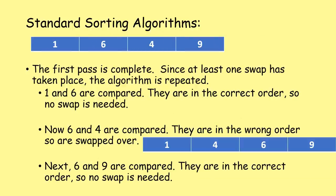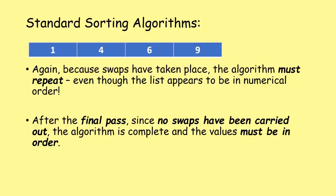After the first pass, since at least one swap has taken place we repeat the algorithm. 1 and 6 are in correct order - no swap. 6 and 4 are in wrong order - swapped. 6 and 9 are in correct order - no swap. We now have 1, 4, 6, 9. Even though it looks sorted, because a swap occurred, the algorithm must run through again. After this final pass with no swaps, the algorithm is complete and the values must be in the correct order.